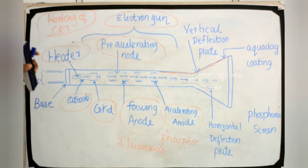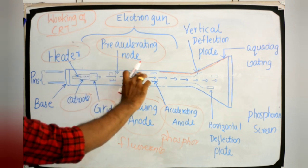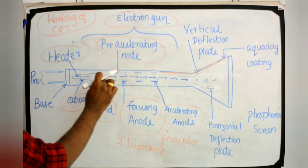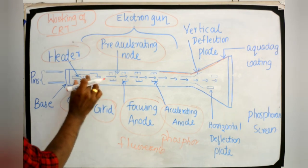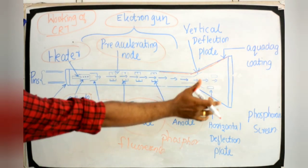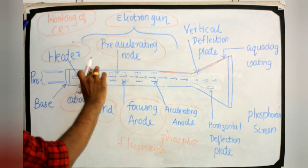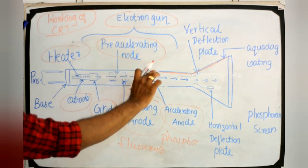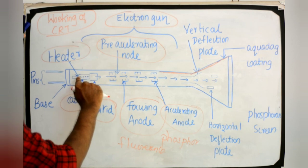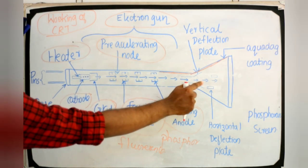The working parts of a CRT are enclosed in a vacuum glass envelope so that the emitted electrons can easily move from one end of the tube to the other.